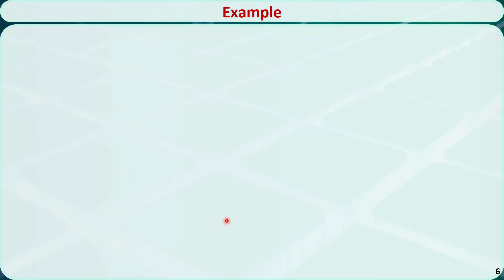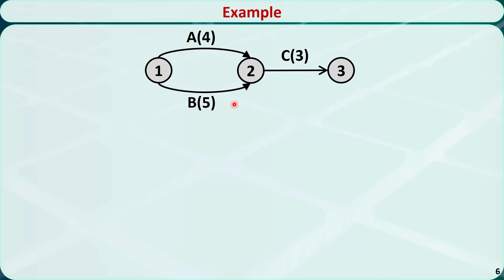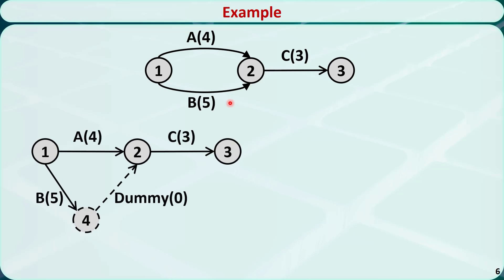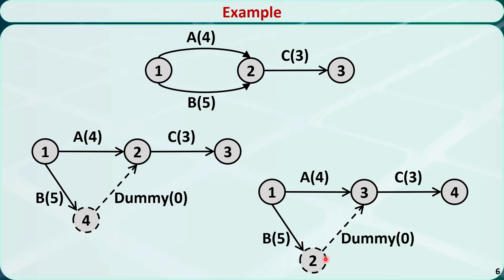Let's check this example. It has three nodes and three activities. It violates Rule 5 because these two nodes are connected by two arcs, A and B. To fix this, we add a dummy node and a dummy activity with a duration of zero. After this modification, node 1 and node 2 are no longer connected by two arcs. However, this change violated Rule 3 — for the dummy activity, the beginning node 4 is larger than the completion node 2. So we further modify the figure and renumber the nodes. Now there is no violation: node 1 is the starting node and node 4 is the end node of the project.